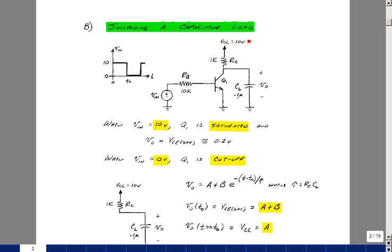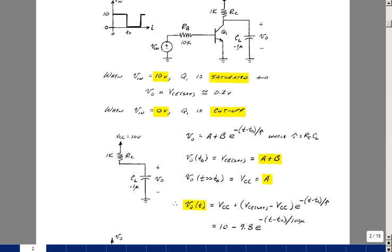Then what we've got is a 10 volt power supply, a resistor and a capacitor that's sitting at a very low voltage, so it's going to try to charge up to the power supply. Our equivalent circuit, if we were cutting off the transistor, would just be this RC charging circuit.